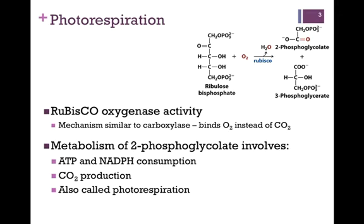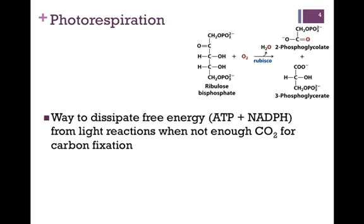The 2-phosphoglycolate is then metabolized, and in that process we consume ATP and NADPH. We also generate CO2. This is why it's referred to as photorespiration, because the plant takes in oxygen and generates CO2. The question is, why would you want to carry out this process of photorespiration? After all, we're spending energy in the form of ATP and reducing equivalents, and we're not fixing any carbon.